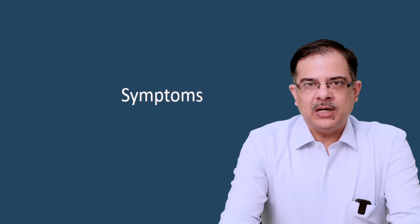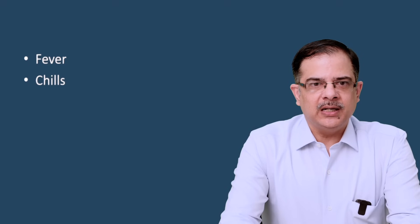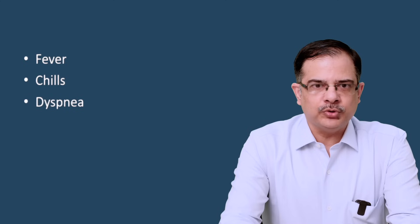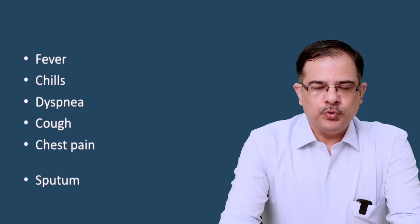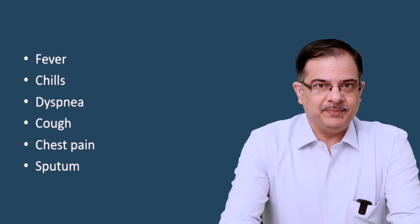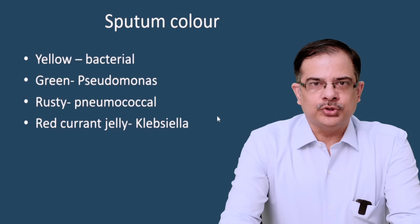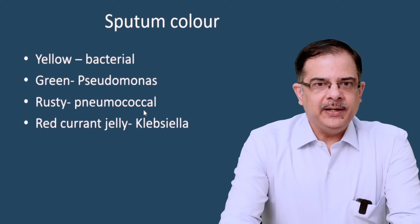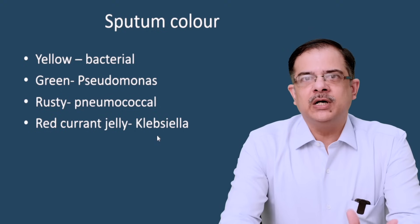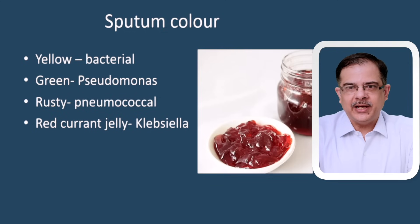The cardinal symptoms of pneumonia are fever associated with chills, dyspnea due to hypoxemia, cough, chest pain due to pleural involvement, and sputum production especially in typical pneumonias. Depending on sputum color we can diagnose the etiology: yellow sputum is most likely bacterial; green sputum is seen in Pseudomonas; rusty sputum is seen in pneumococcal pneumonia; and red currant jelly sputum is a feature of Klebsiella infection.